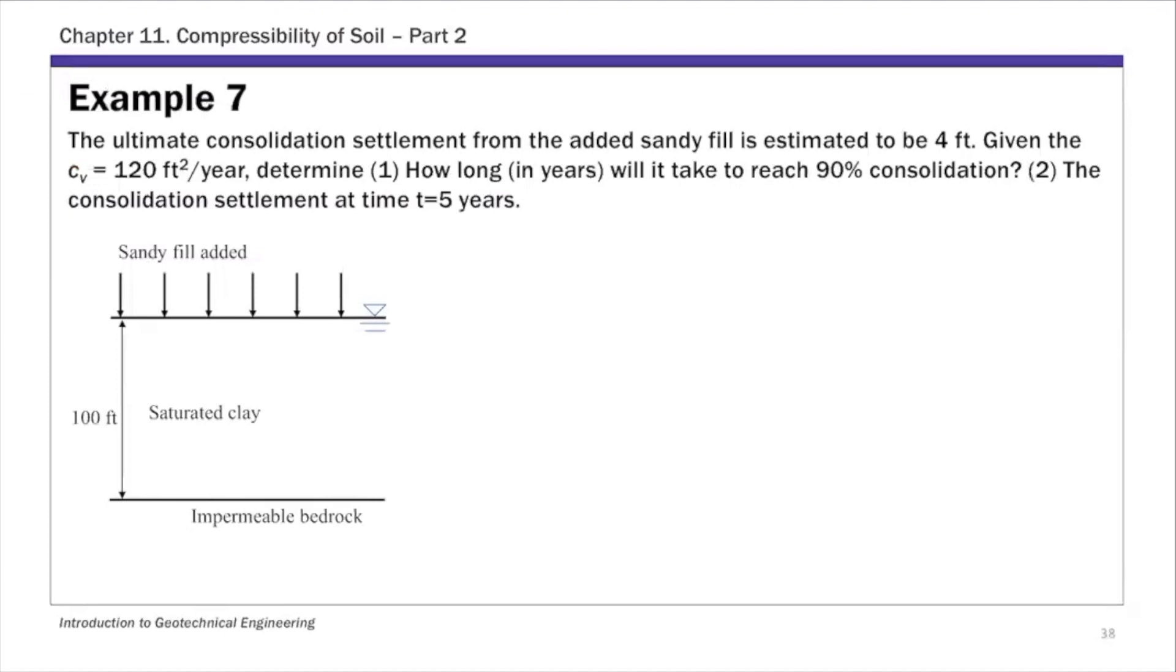This is Example 7 from Chapter 11. We have an ultimate consolidation settlement of 4 feet, so sc final is given. We're asked to determine how long it will take to reach 90% consolidation, and the consolidation settlement at time t equals 5 years.